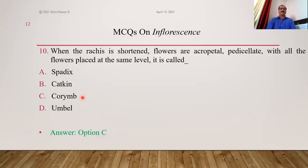When this is the situation — flowers pedicellate with pedicels of different lengths so that all flowers are placed at the same level — the inflorescence is called corymb type. Corymb is the answer.